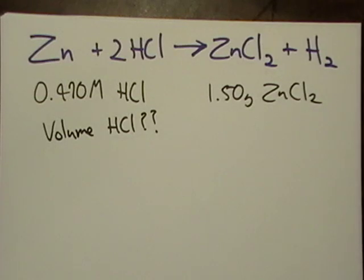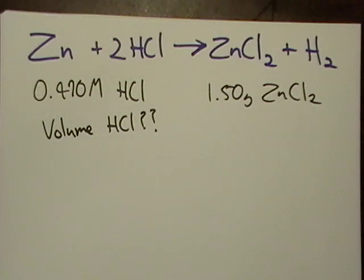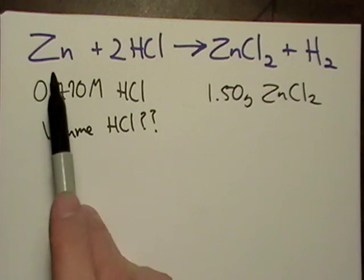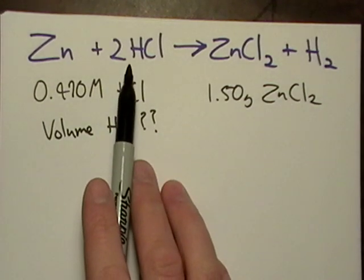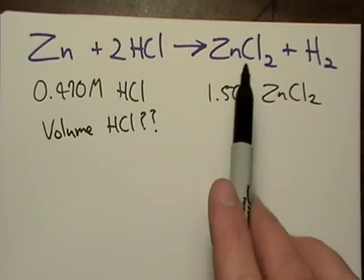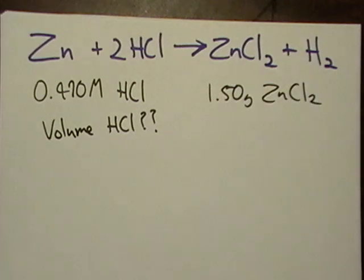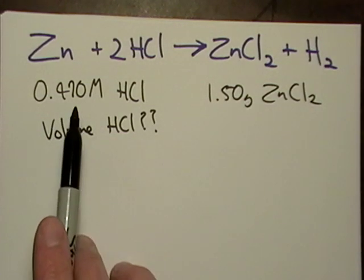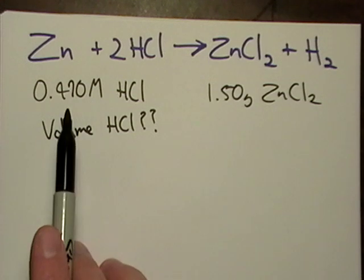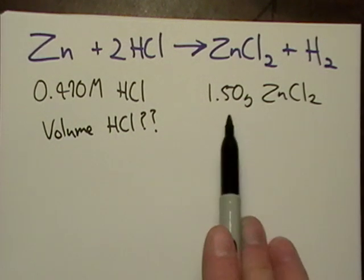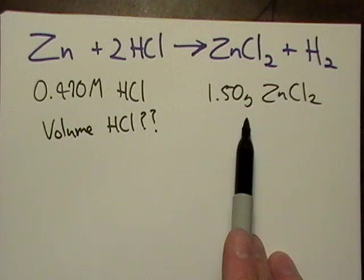We're building on concepts of molarity and molar concentration. I've set up a problem here. Note the balanced equation: elemental zinc plus hydrochloric acid yields zinc chloride and hydrogen gas. I'm using 0.470 molar HCl.